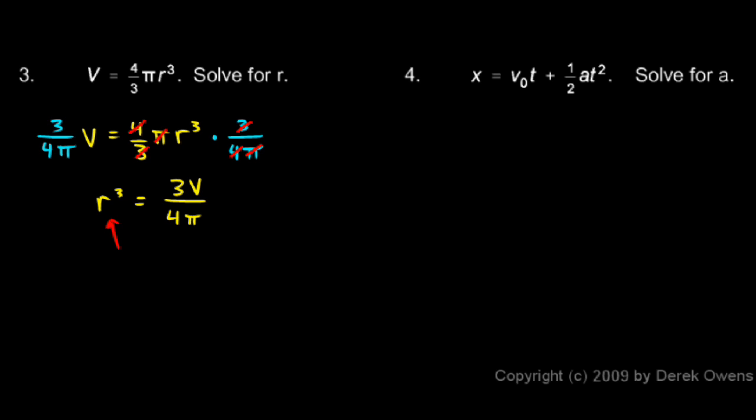And then to solve for r, I need to take the cubed root. So I take the cubed root of both sides, and I get r equals the cubed root of 3V over 4 pi. And that's my answer.